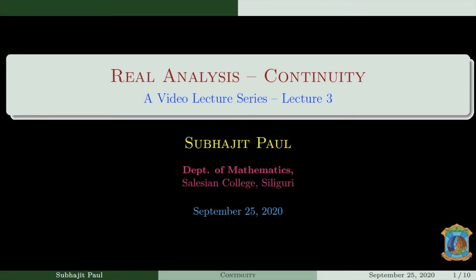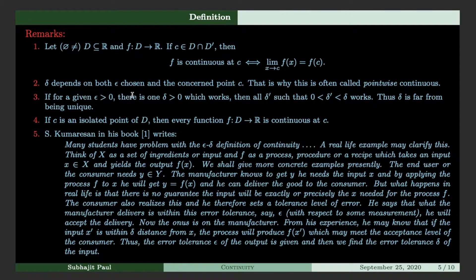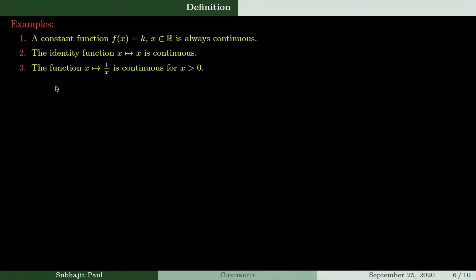Today is the third lecture in the lecture series on continuity. In the last class we saw some examples: the constant function is always continuous, and the identity function is also continuous. I mentioned in the definition of continuity that delta depends on both epsilon and the concerned point c — that is why this is often called pointwise continuous. To illustrate this remark, we have the next example.